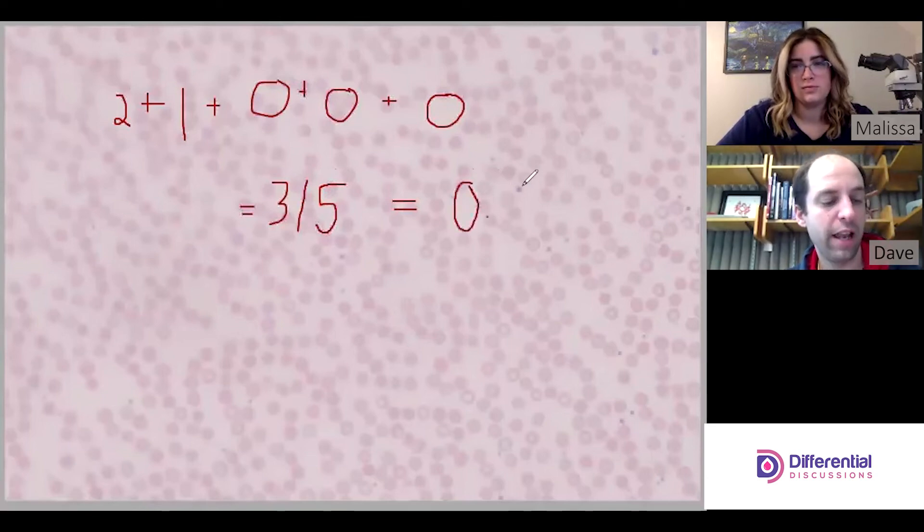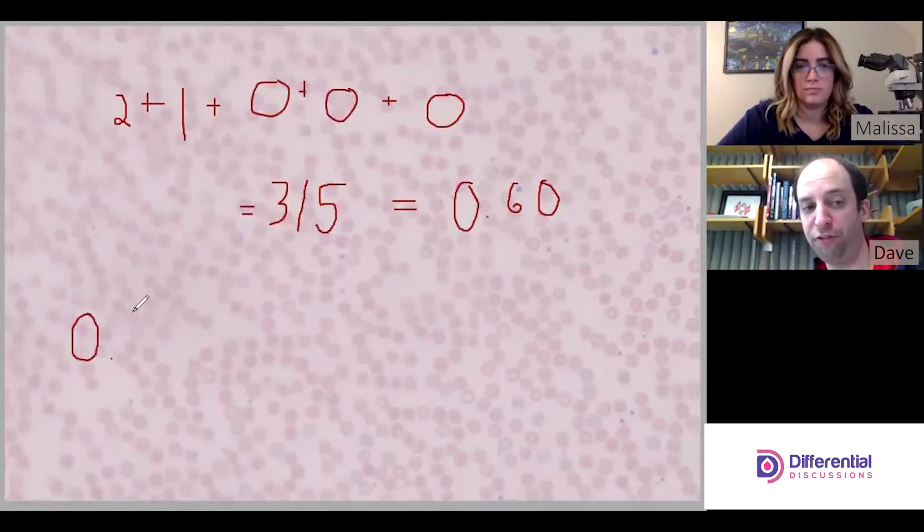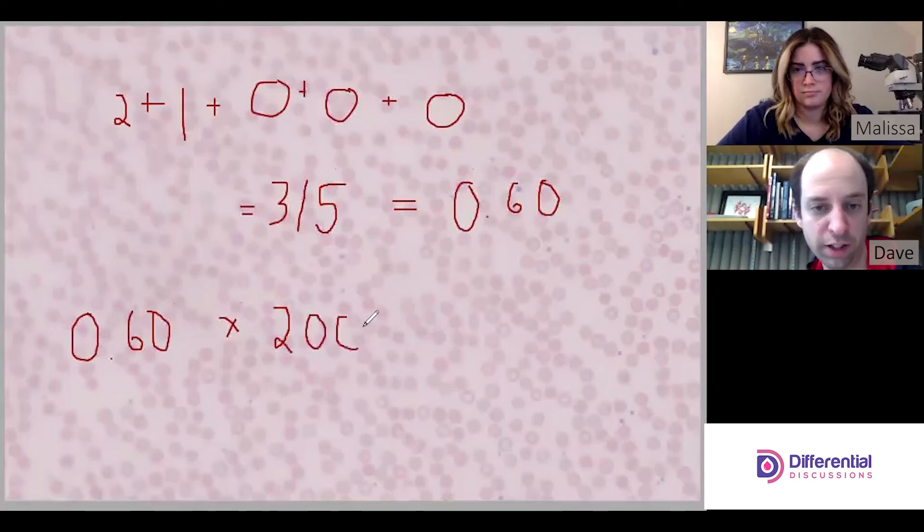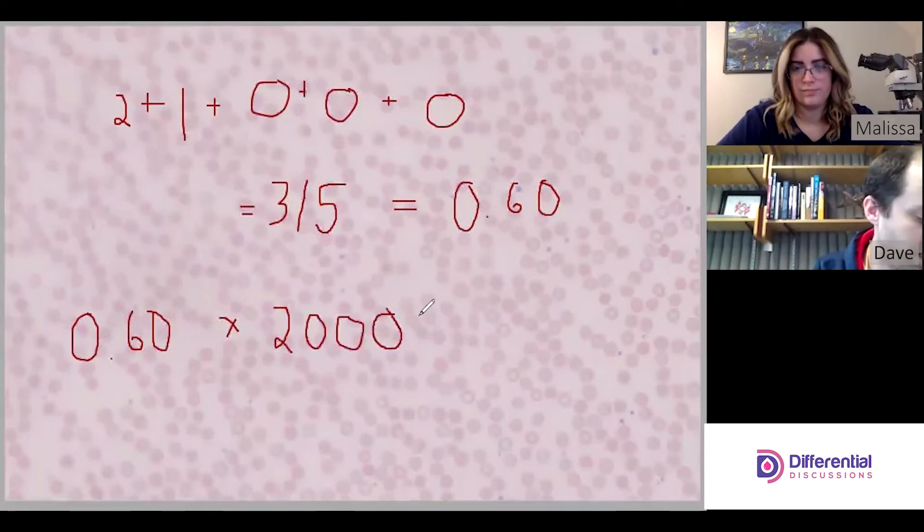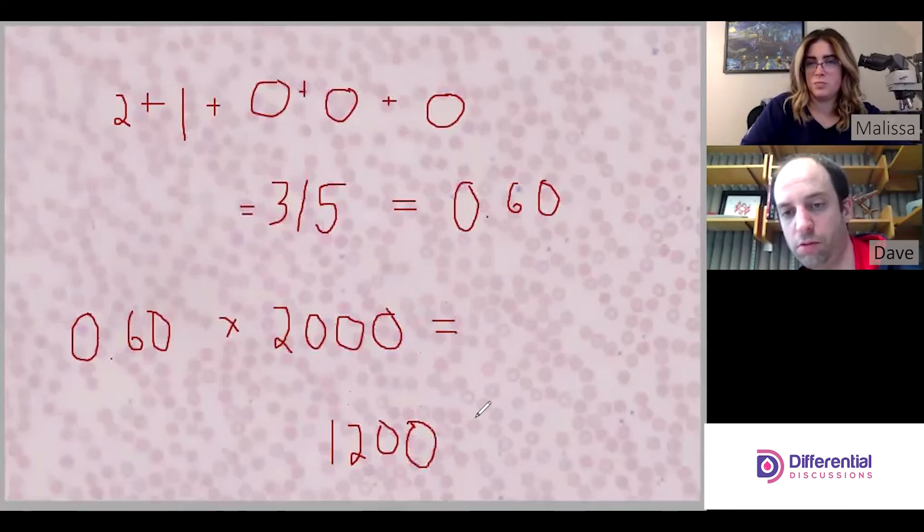And then now we have 0.6. And this is where we would take the factor that would correspond to the microscope and the field that it's seeing. And for the sake of this exercise, we're going to use 2000 as our WBC factor. So 2000 times 0.6 comes out to 1200. So 1200 white cells per microliter, or 1.2k per microliter, as typical units we would use from an analyzer.